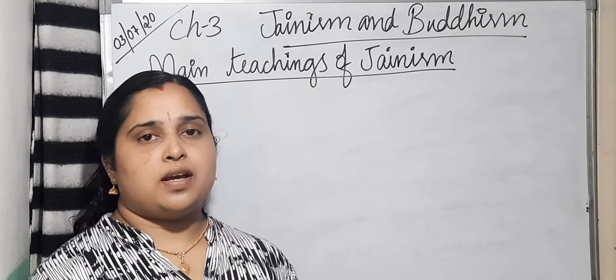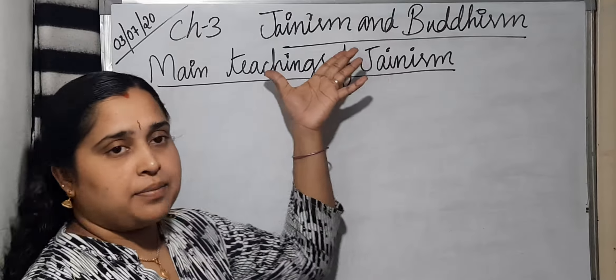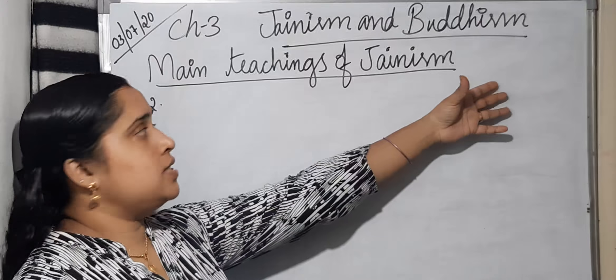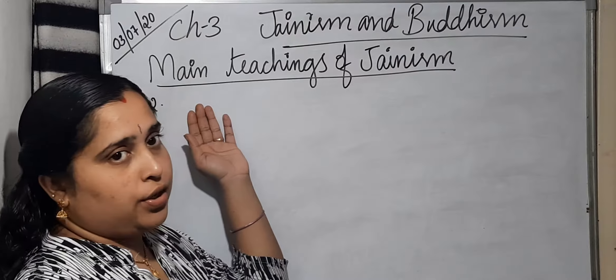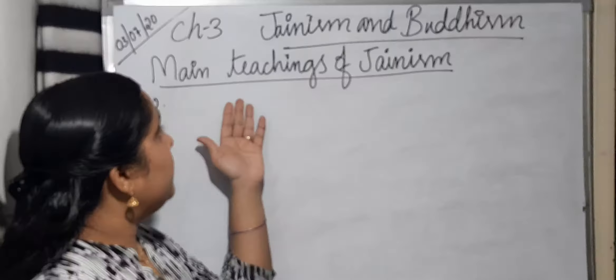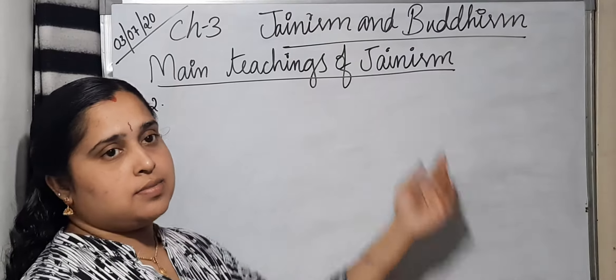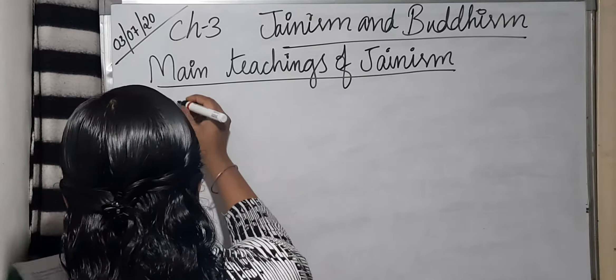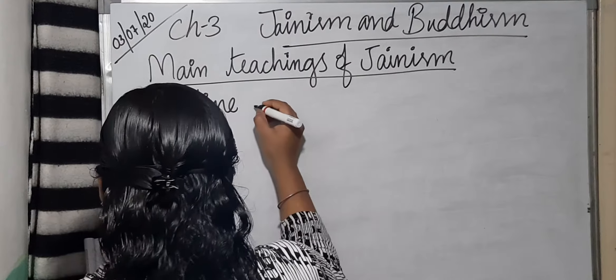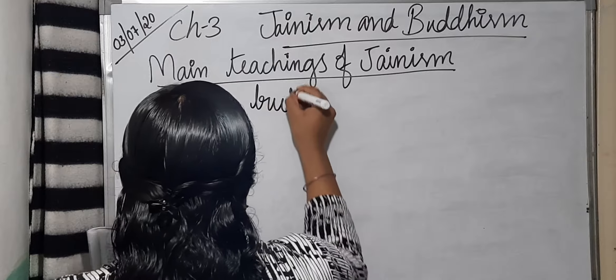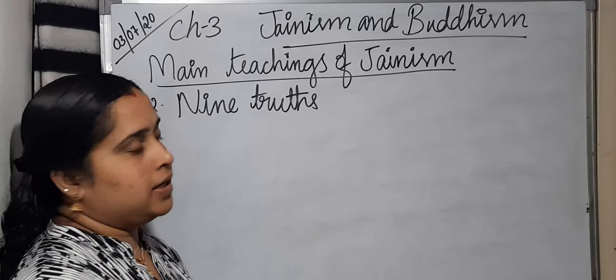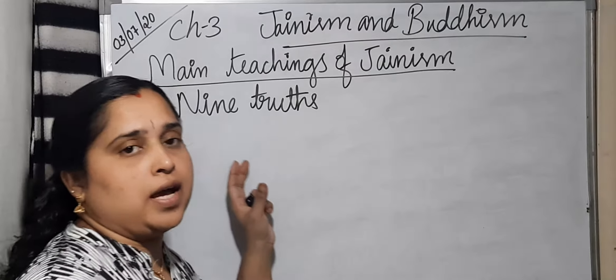Hello students, today we are going to continue our chapter, that is Chapter 3, Jainism and Buddhism. So in our previous video, we had studied the main teachings of Jainism's first point — the 5 Vows.